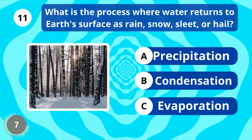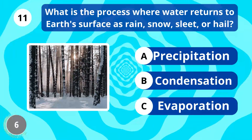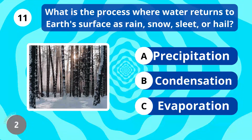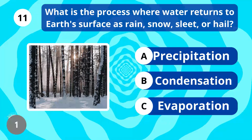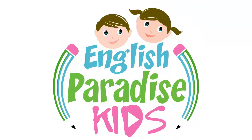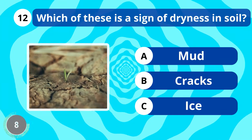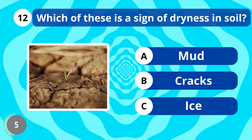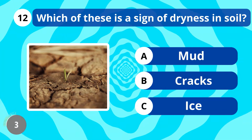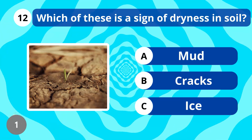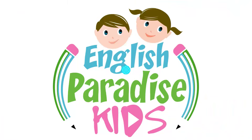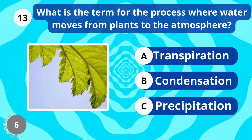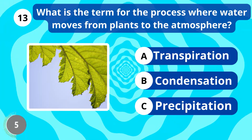What is the process where water returns to earth's surface as rain, snow, sleet, or hail? Precipitation. What is the term for the process where water moves from plants to the atmosphere? Transpiration.